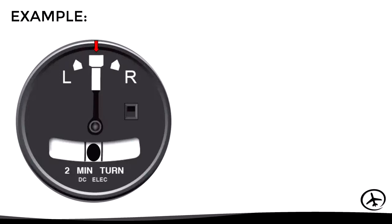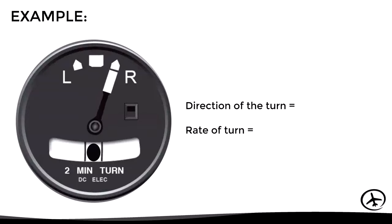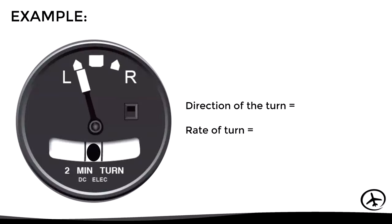Here is how to read the instrument: when the needle points to the center mark, the aircraft is flying straight with a constant heading — the rate of turn is zero degrees per second. If the needle moves to the right side mark, the aircraft is turning to the right at three degrees per second. Similarly, if the needle points the left mark, it represents a turn to the left at three degrees per second.